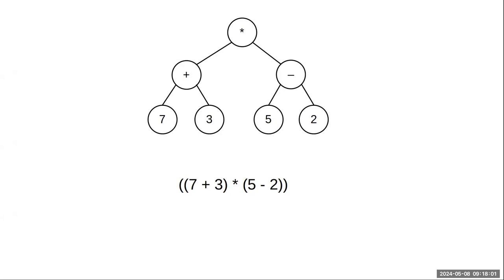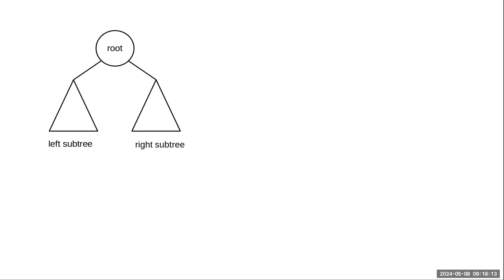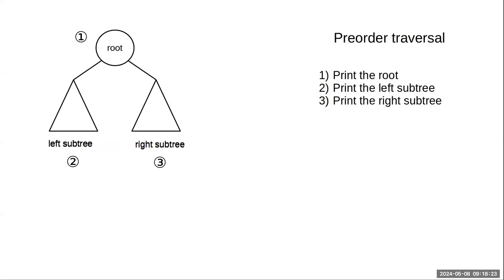To do this we need to traverse the tree. Traversing an array or a list, there's basically two ways — forward or backwards — because it's one dimensional. With trees we have several options. Here's our tree with the root and left and right subtrees. I'm going to be using the recursive definition because that makes things a lot easier.